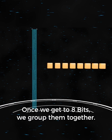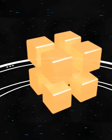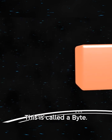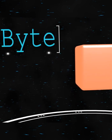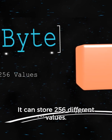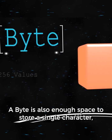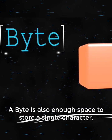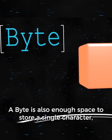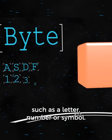Once we get to eight bits, we group them together. This is called a byte. It can store 256 different values. A byte is also enough space to store a single character, such as a letter, number, or symbol.